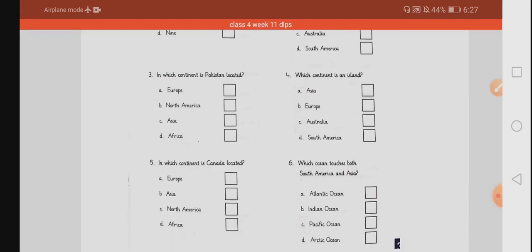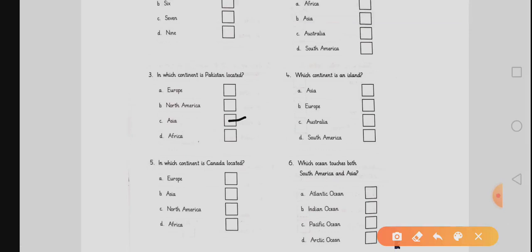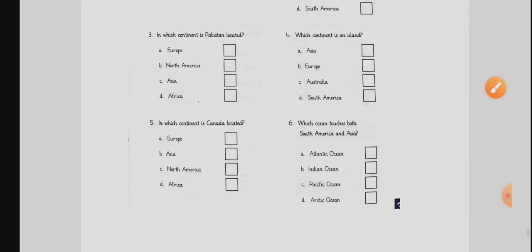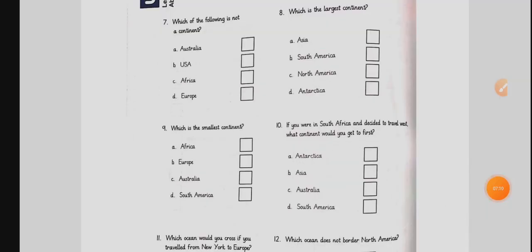In which continent is Pakistan located? Pakistan is located in continent Asia. Which continent is an island? Australia is a continent and it's an island. In which continent is Canada located? Canada is located in North America. Which ocean touches both South America and Asia? Again, you will have to consult the map and then you will find out the answer. Which of the following is not a continent? USA is not a continent, it's a country.